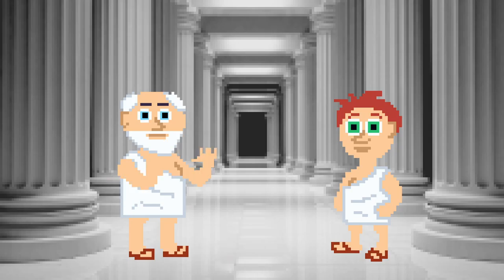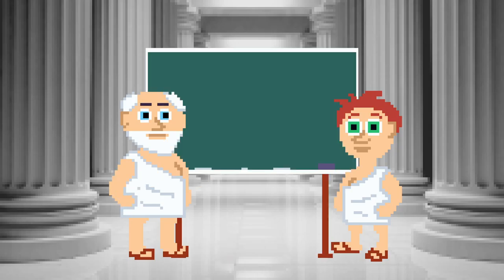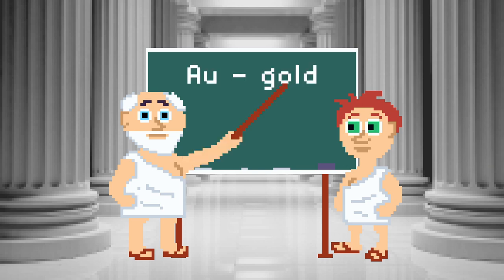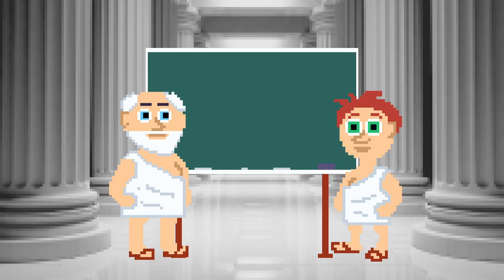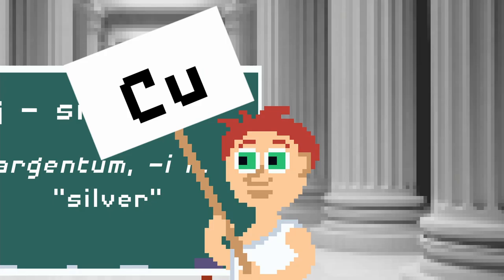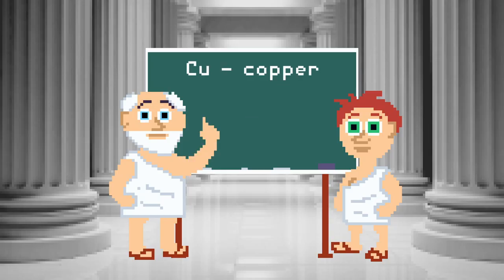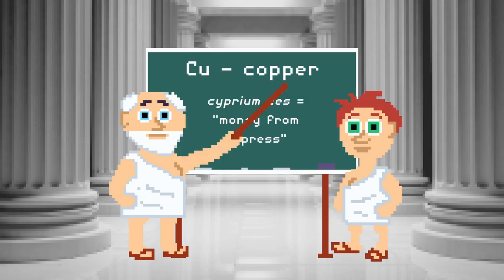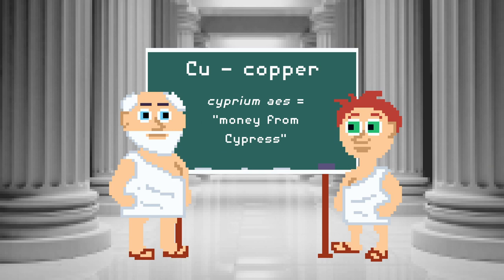Okay, that's a real one. Gold — comes from Latin. Aurum means gold. Silver — comes from Latin. Argentum means silver. Copper — also comes from Latin. Cuprium meant money from Cyprus. Copper was mined in Cyprus in the ancient world.